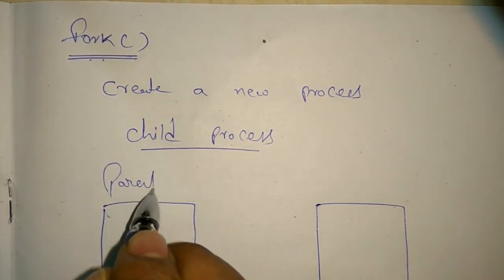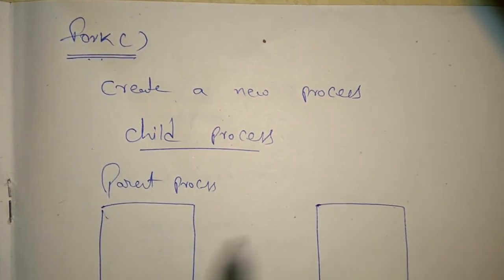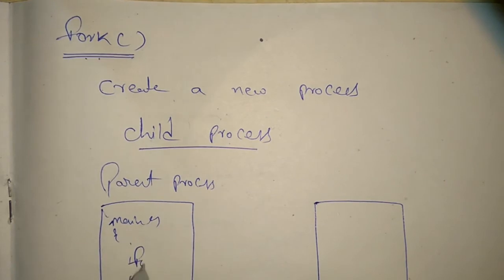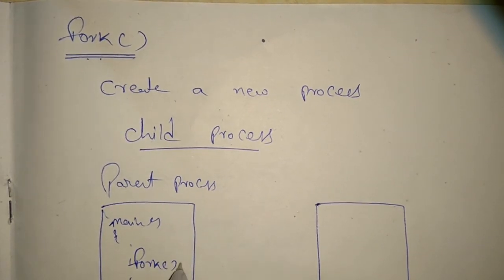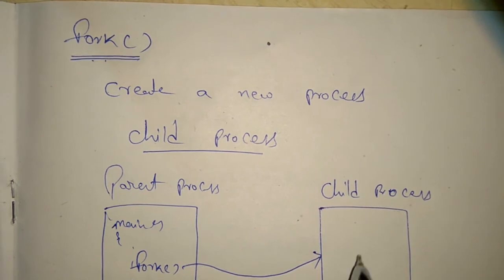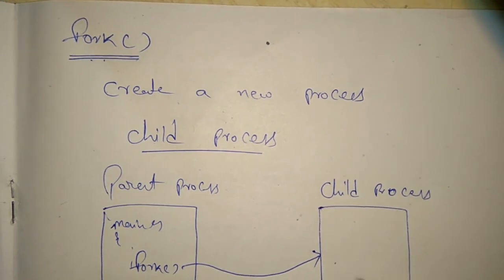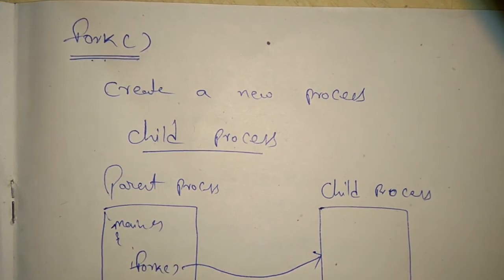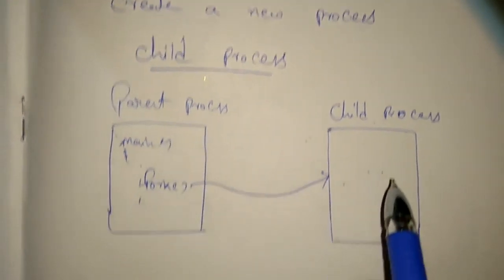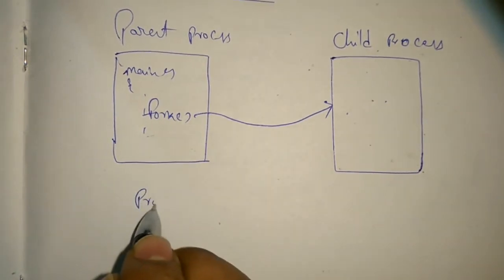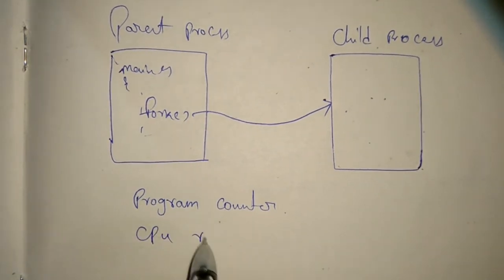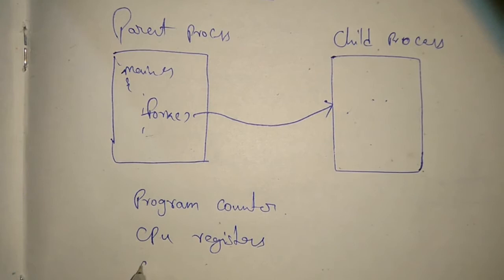Suppose this is a parent process. When fork system call is executed in this parent process, a child process is created. The child process has the same code of the parent process — it copies the same code. This child process also shares the same program counter, same CPU registers, and same open files.